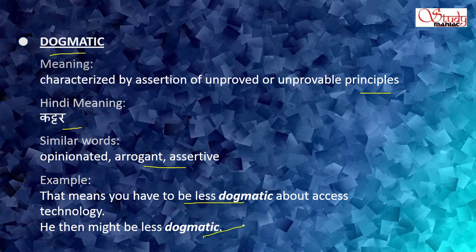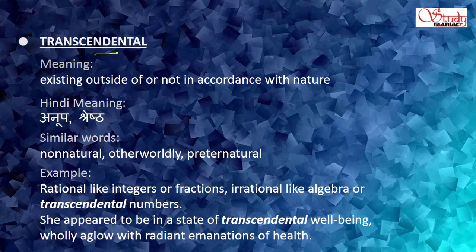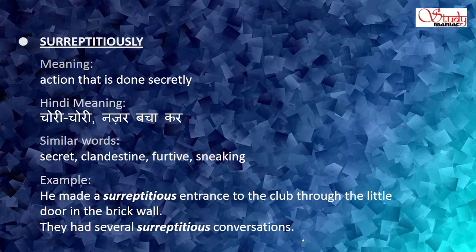Next: transcendental, meaning existing outside of or not in accordance with nature. Hindi meaning: anoop, shrestha. Similar words: non-natural, otherworldly, preternatural. Example: Rational like integers or fractions, irrational like algebra, or transcendental numbers. She appeared to be in a state of transcendental well-being, all aglow with radiant emanations of health.